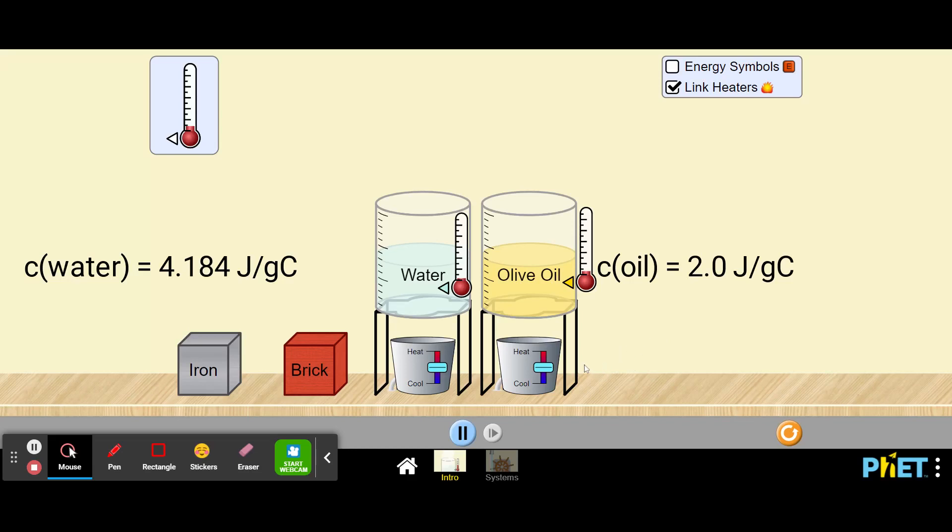Hey friends, so we're going to take another quick look at specific heat. Remember that the specific heat of water is 4.184 joules per gram degree C, and the specific heat for olive oil is about 2 joules per gram degree C.